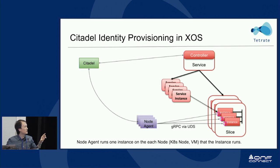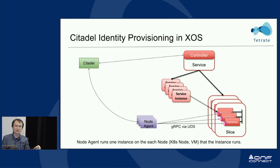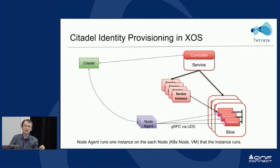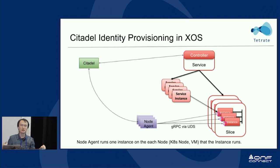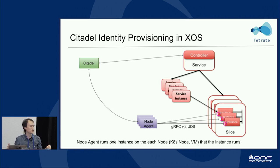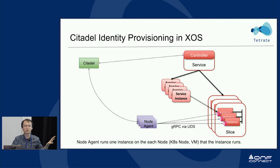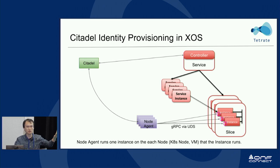An important point to emphasize: node agent and Envoy talk via gRPC, and since this is used as identity bootstrap, they communicate over a Unix domain socket. In Kubernetes, this is done via flex volume mount, so you don't have the bootstrap problem you'd have with TCP over the network, where you'd need another identity to talk to the node agent. This is why the node agent is needed — to provide identity and bootstrap certificates to each proxy.